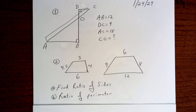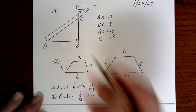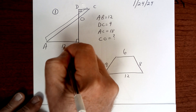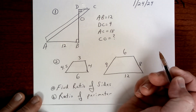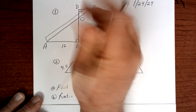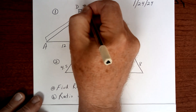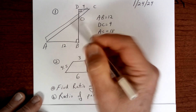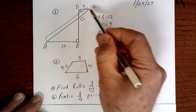Hello and good morning. Let's take a look at this diagram here. AB is 12, DC is 4, and this whole thing from here to here is 18.